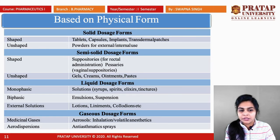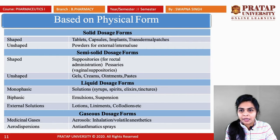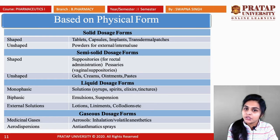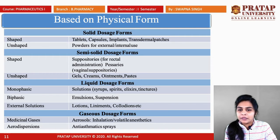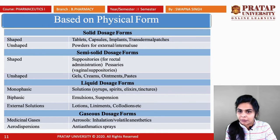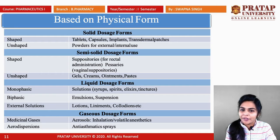Based on physical form there are four classes: solid, semi-solid, liquid, and gaseous dosage forms. In solid dosage forms, shaped forms include tablets, capsules, implants, and transdermal patches; unshaped forms include powders for external or internal use. In semi-solid dosage forms, shaped forms include suppositories (for rectal administration) and pessaries (for vaginal administration); unshaped forms include gels, creams, ointments, and pastes.